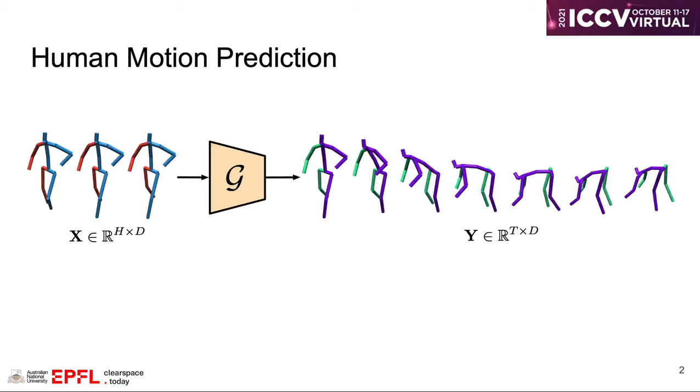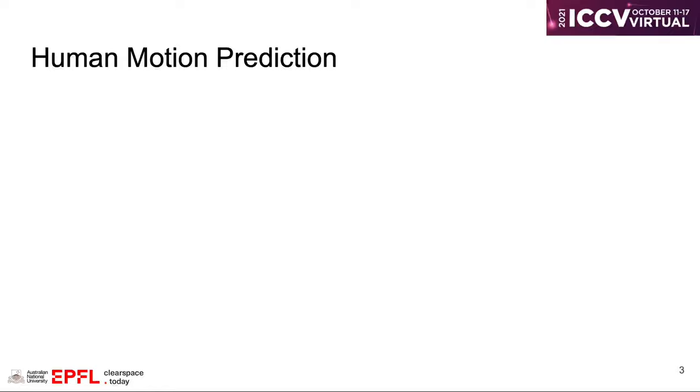The task of human motion prediction is that, given the sequence of past human poses, we want to learn a model to predict human movements in the future.